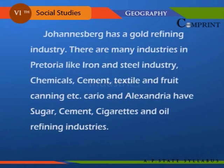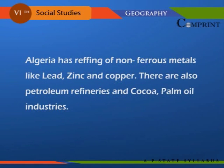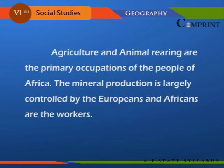Johannesburg has a gold refining industry. There are many industries in Pretoria, including iron and steel, chemicals, cement, textiles, and fruit canning. Cairo and Alexandria have sugar, cement, cigarettes, and oil refining industries. Algeria has refining of non-ferrous metals like lead, zinc, and copper, as well as petroleum refineries and cocoa palm oil industries. Agriculture and animal rearing are the primary occupations of the people of Africa. Mineral production is largely controlled by Europeans, while Africans are the workers.